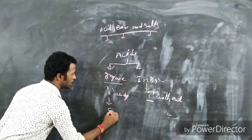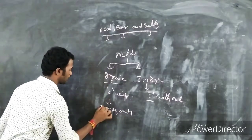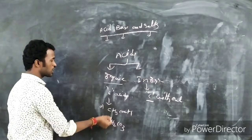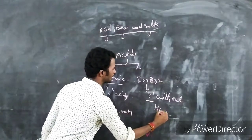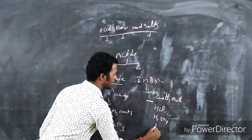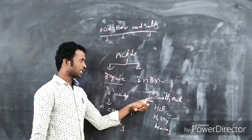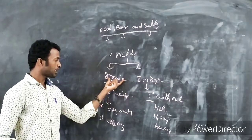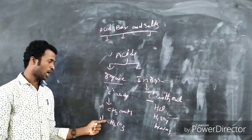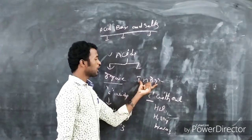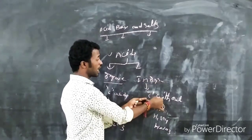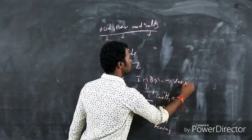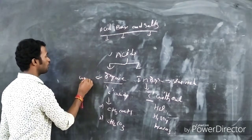Examples of organic acids include acetic acid (CH3COOH) and carbonic acid (H2CO3), both of which contain carbon atoms. Examples of inorganic acids include hydrochloric acid (HCl), sulfuric acid (H2SO4), and nitric acid (HNO3). Inorganic acids are generally called strong acids, while organic acids are generally called weak acids.